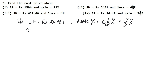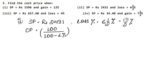Now we will find CP. The formula for CP in case of loss is: CP = 100 upon (100 minus loss percent) into SP.